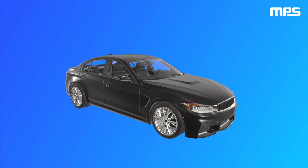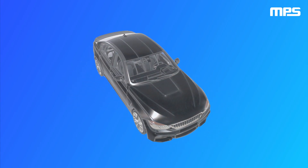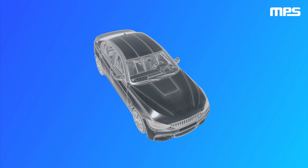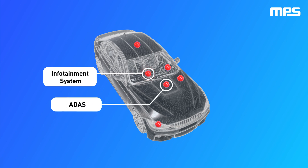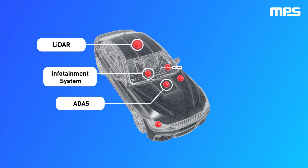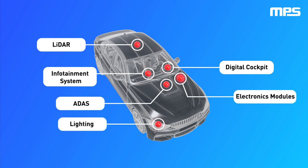Continuing advances in automotive technology have made modern cars and automotive systems become more complex. Typical loads for the automotive battery system include features such as the infotainment system, ADOS, LIDAR, the digital cockpit, lighting, electronics modules, and more.